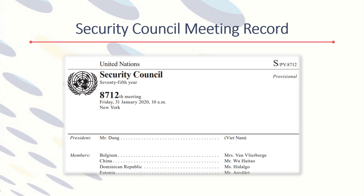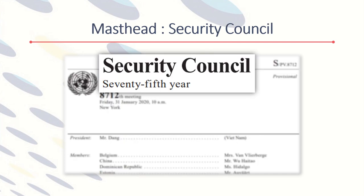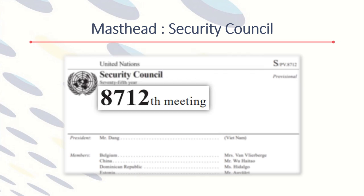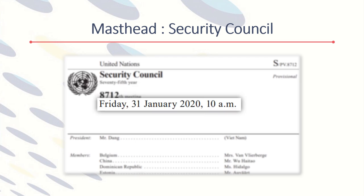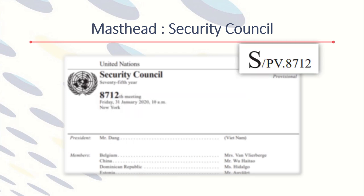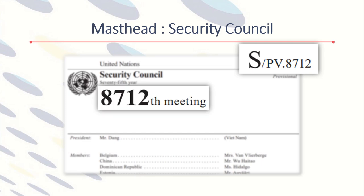We'll look at an example of a Security Council meeting record. In the masthead, we see the UN body and the session information — in this case, Security Council's 75th year. The meeting number is listed along with the date, time, and place the meeting was held. The document symbol is found in the upper right corner and incorporates the meeting number into the symbol. SPV 8712 indicates the Security Council verbatim record of the 8712th meeting.